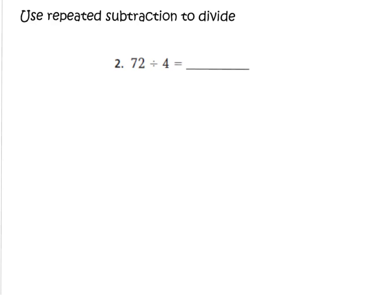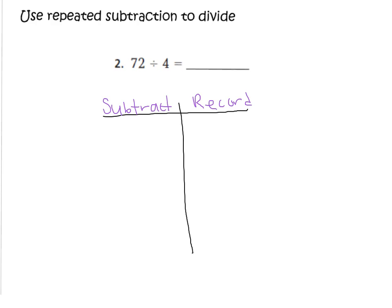Let's look at our first problem, number 2: 72 divided by 4. I'm going to show you how to use repeated subtraction to find the quotient. First, we're going to draw a T-chart to help us keep our thinking together. On one side we're going to write 'subtract,' and on the other side we're going to write 'record,' because we are going to be recording our groups that we're going to be subtracting. So first I need to look at 72 divided by 4 and start with my 72 in the subtract section.